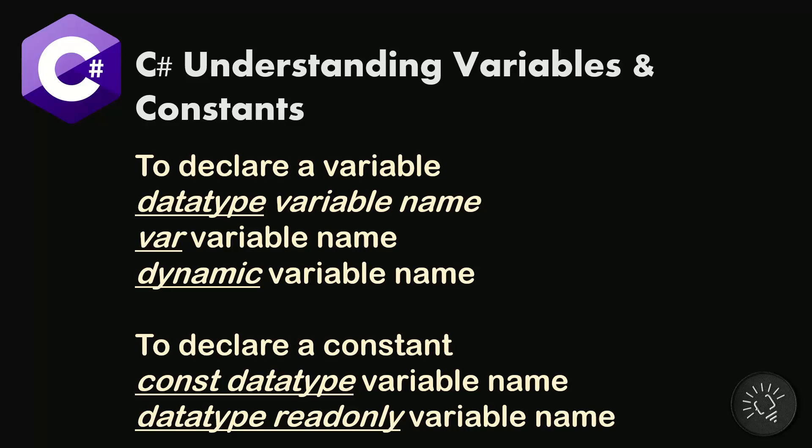Now C# does give you multiple options to declare variables and constants. If you want to declare a variable, you can either declare it using the data type — specifying the exact data type that the variable is — or you can declare it using the var keyword, or you can declare it using the dynamic keyword. And for a constant, you can either use the const keyword, or there is a special type of constant you can create using the readonly keyword. I'm going to show you each of these and what exactly they mean.